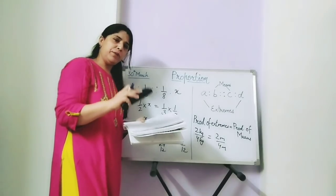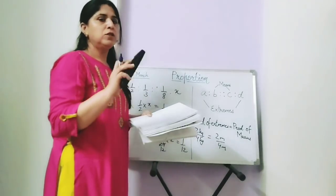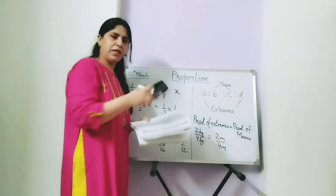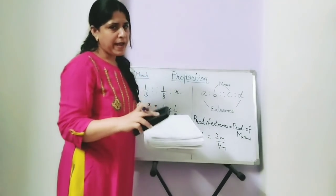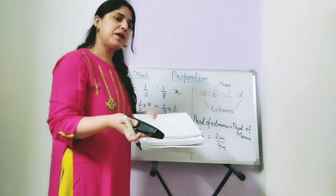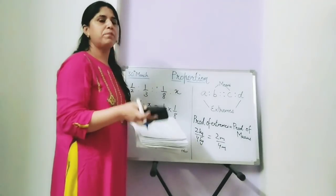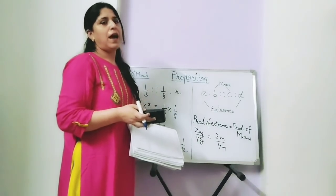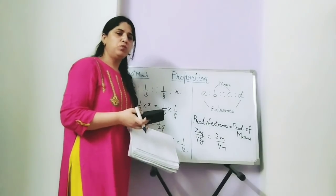Ratio and proportion — the first exercise you have already done. The second exercise, questions 1, 2, 3 and 4 are based on this topic: proportion — checking whether given numbers are in proportion, finding the fourth proportional, or finding x when numbers are in proportion. Do these questions and submit your work by 5 pm to your respective maths teachers.